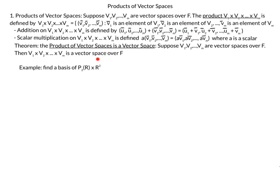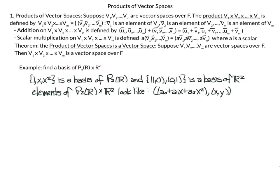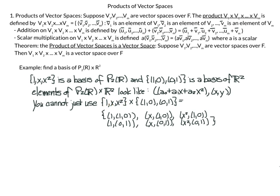Our next example is to find the basis of P2 cross R2. The first thing I do is find the basis of P2 — that's {1, x, x²} — and a basis for R2, which is {(1,0), (0,1)}. Elements look like a polynomial a0 plus a1·x plus a2·x² paired with a vector (x, y). My first try would be to cross the basis for P2 with the basis for R2, giving vectors like (1, (1,0)), (1, (0,1)), (x, (1,0)), (x, (0,1)), (x², (1,0)), (x², (0,1)). But this just doesn't work — you cannot just use the cross product of the bases.